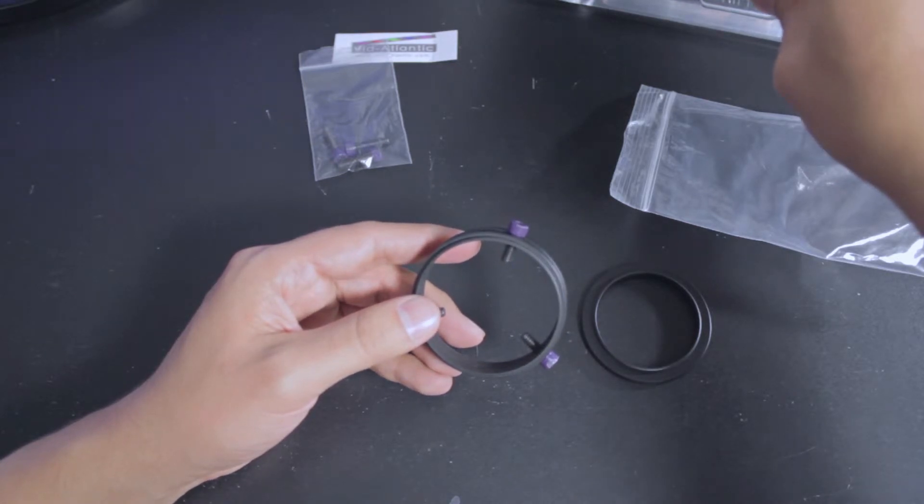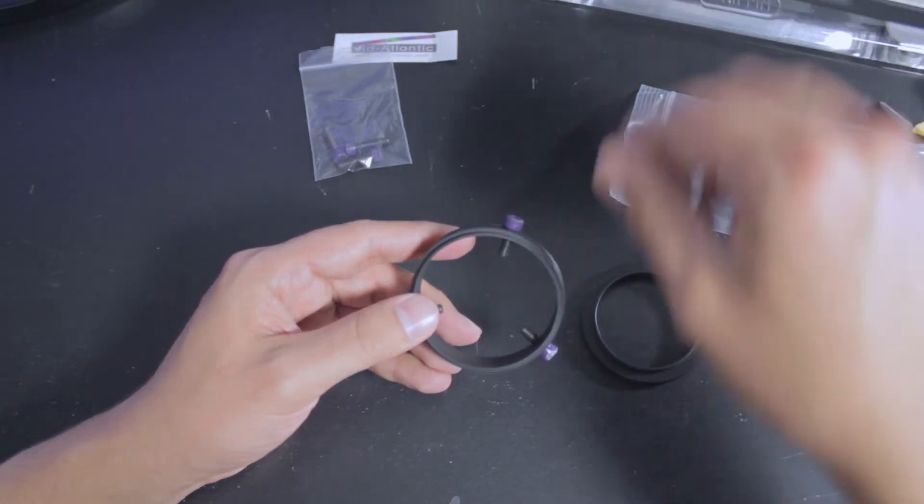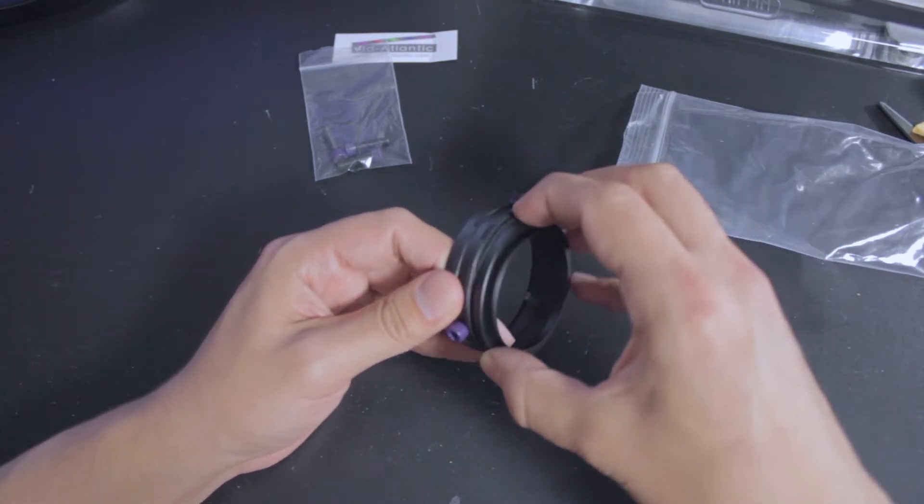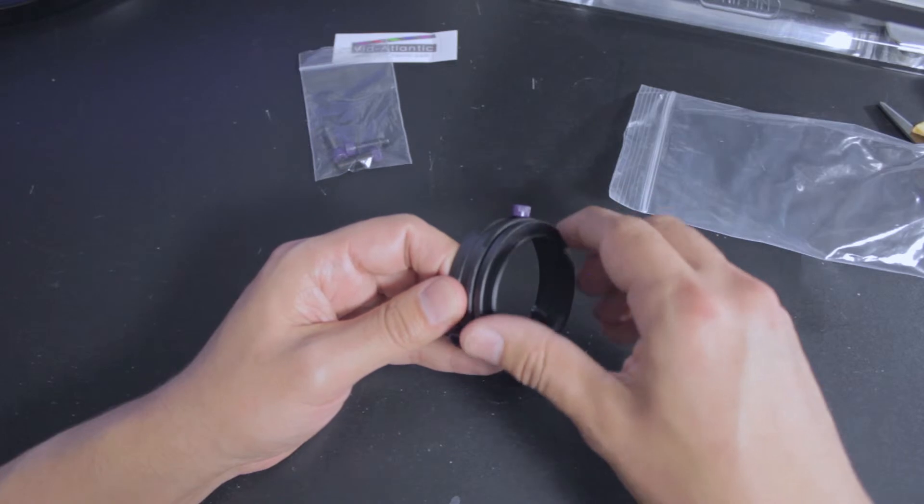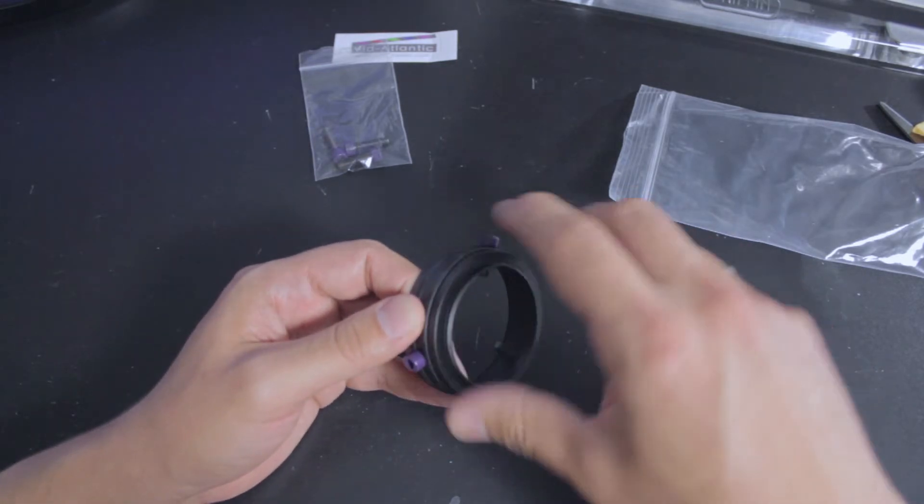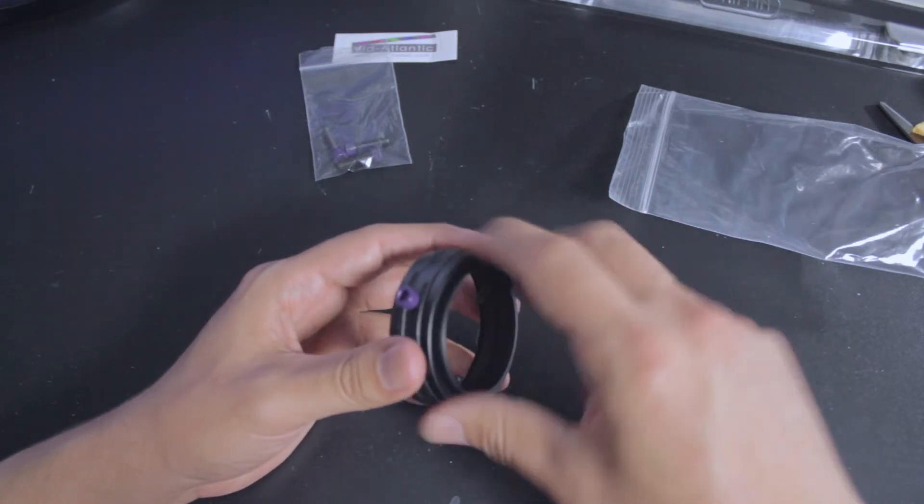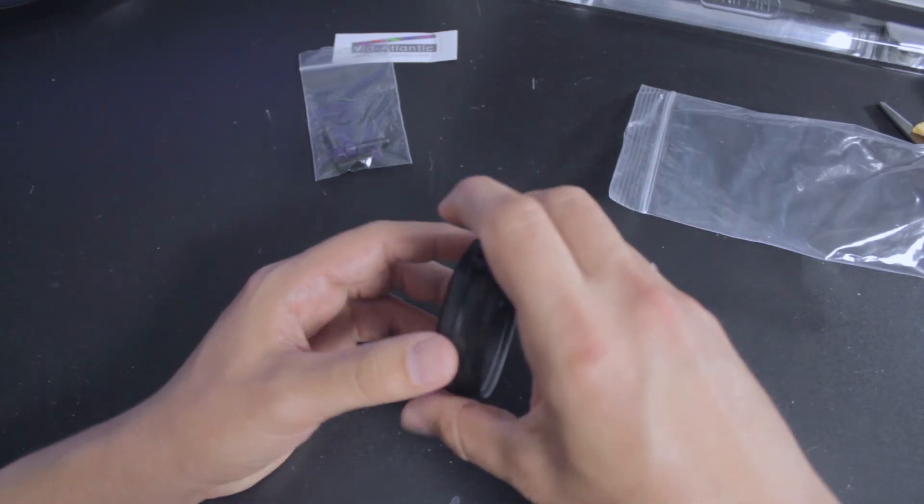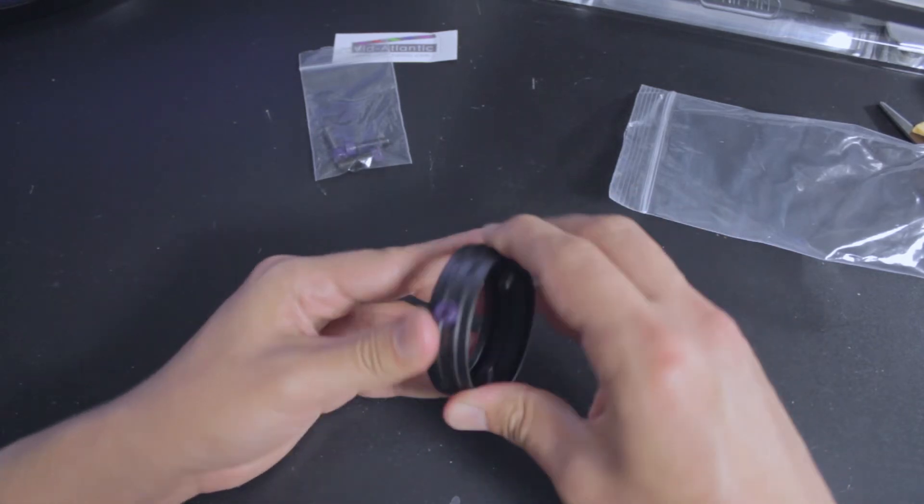It comes factory with a 60 millimeter base, which is this base right here, and this is a step-down ring to 52 millimeter, which is the normal lens size for DSLRs for filter rings.